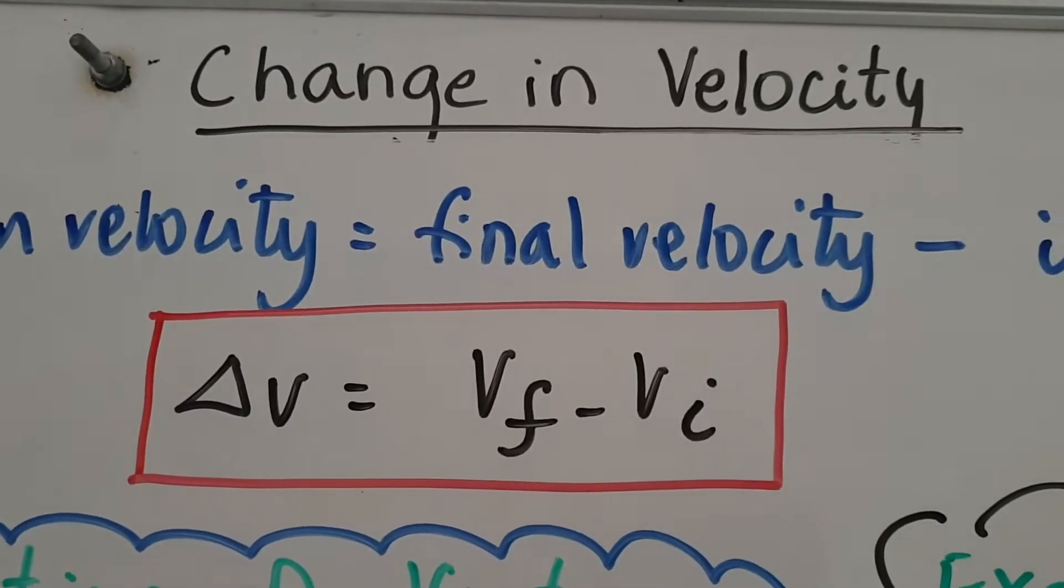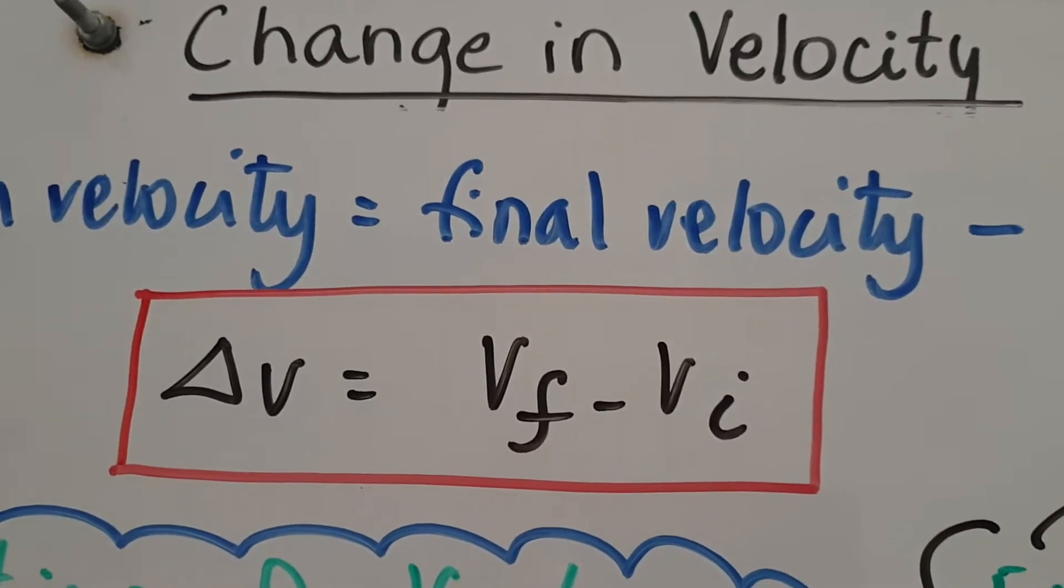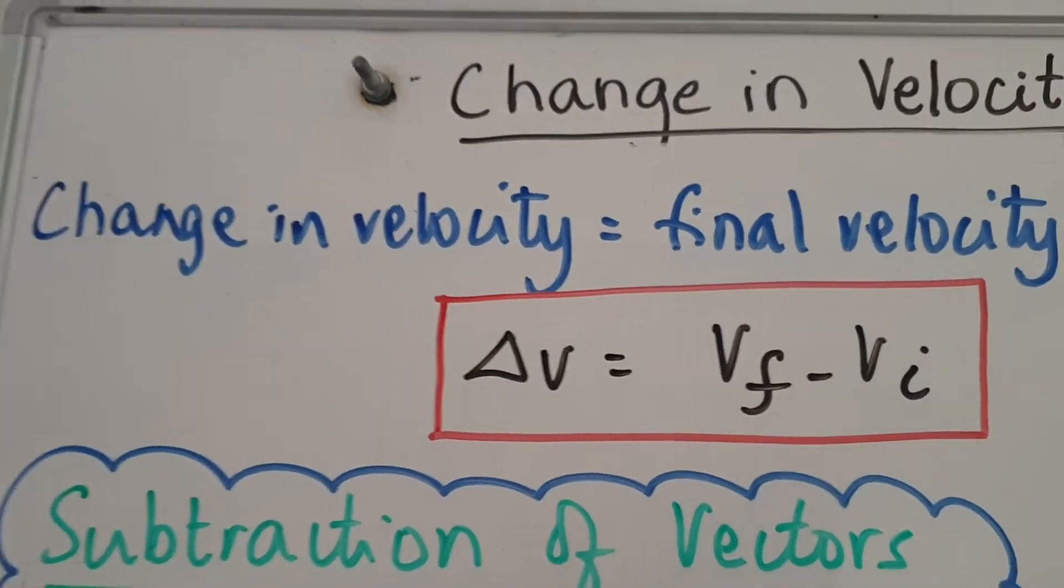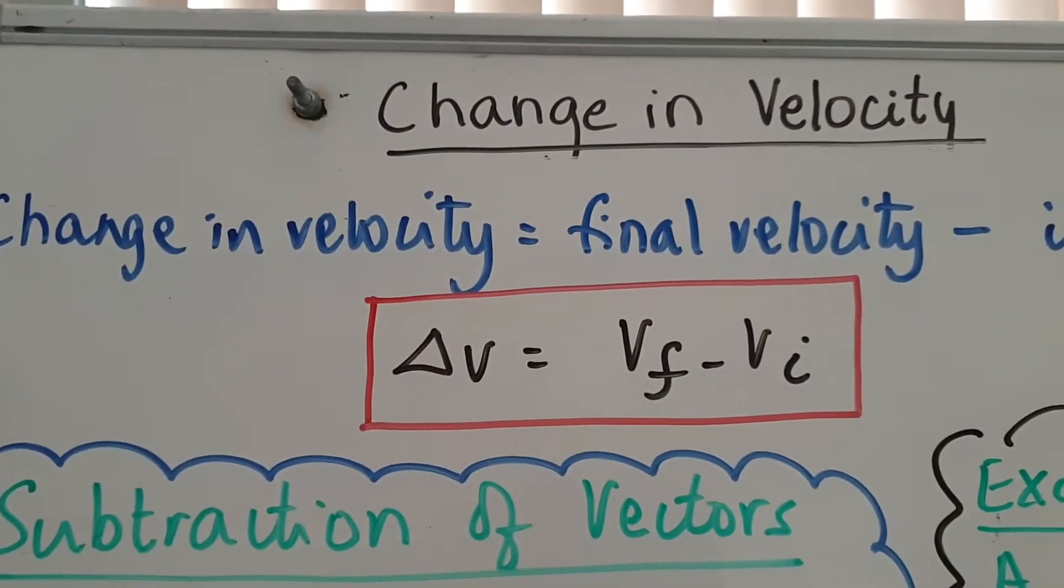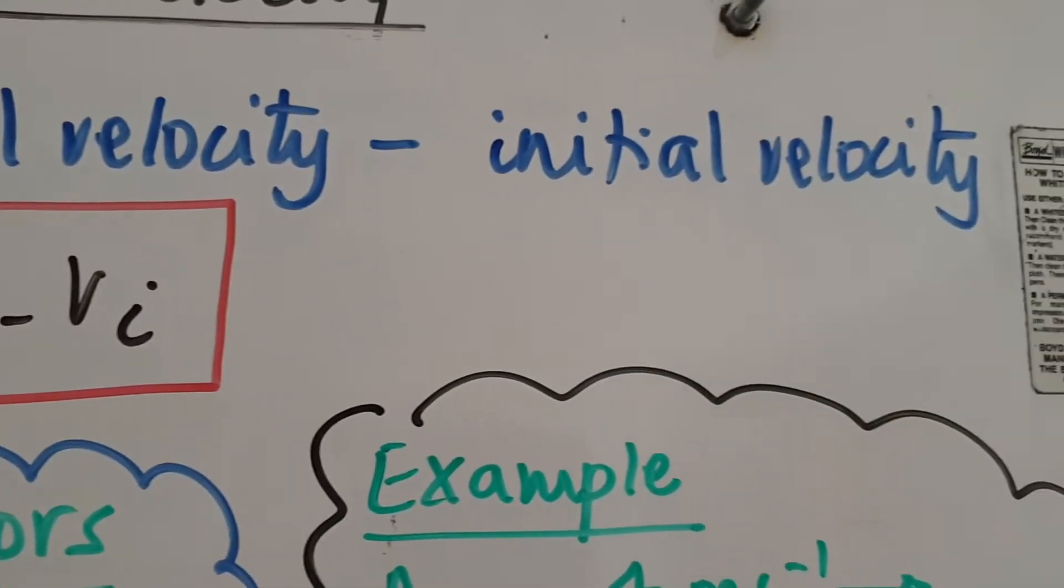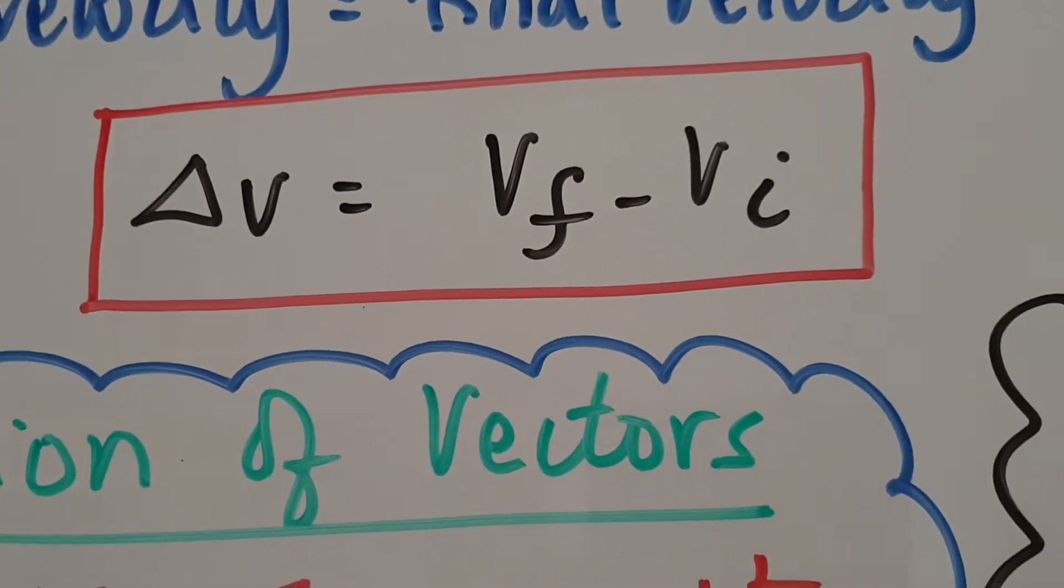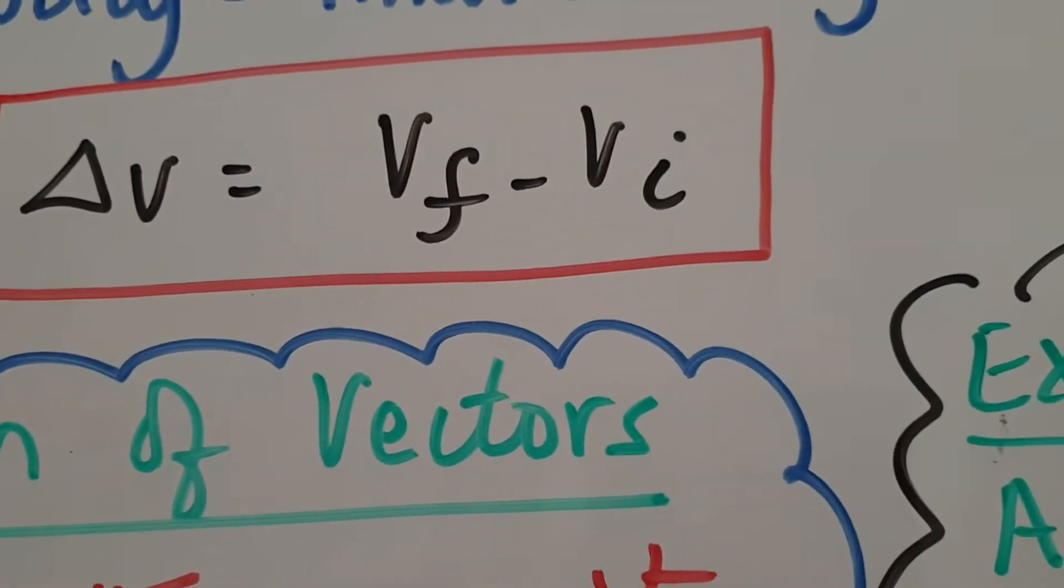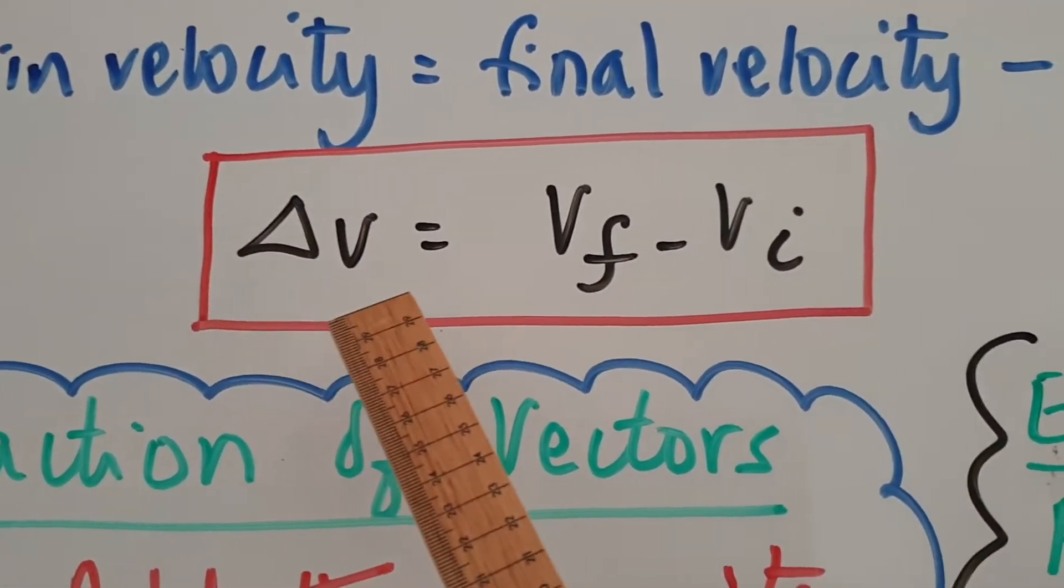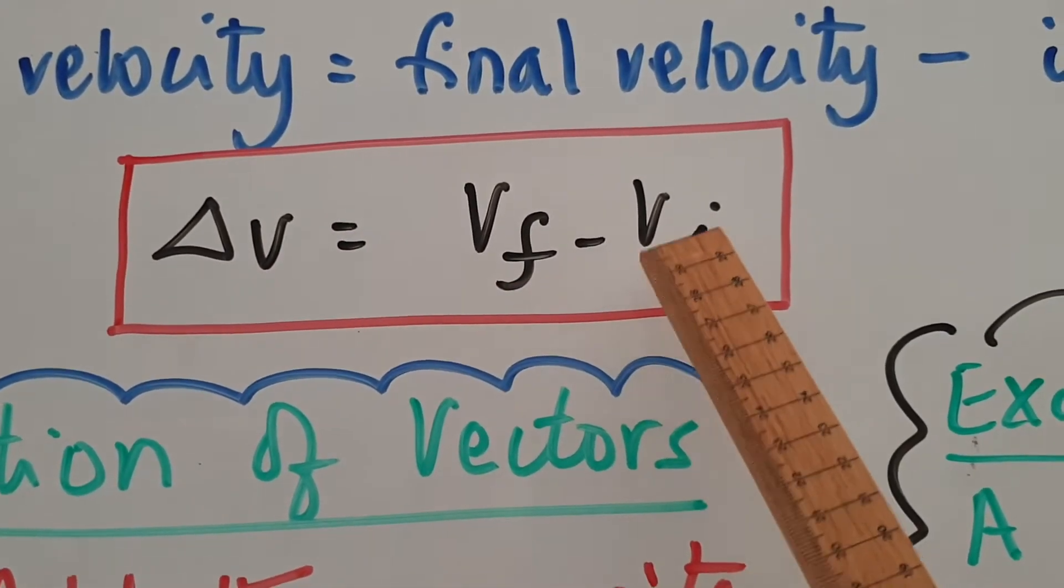Hi everybody, so today's lesson is about change in velocity which has to do with vector subtraction. If you need to find a change in velocity, the way we calculate that is change in velocity is final velocity minus initial velocity. The way that is written in the form using symbols is delta v, so delta stands for change in, v is for velocity, equals vf which is final velocity minus initial velocity.